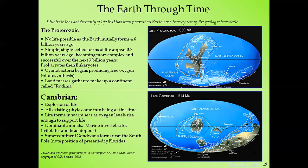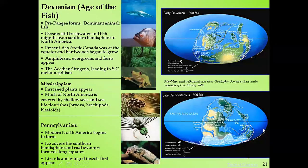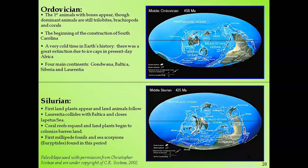The dominant animals were marine invertebrates — trilobites and brachiopods. The supercontinent Gondwana formed near the south pole. Note that the position of the present-day Florida did not yet exist — this whole area was part of one supercontinent called Gondwana.